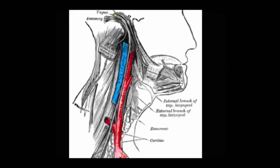Focusing on the right vagus, we can follow its course down through the neck with the great vessels — internal carotid, common carotid coming down the neck. And at this point, it crosses the right subclavian artery, and here it gives off the recurrent laryngeal branch, which passes up towards the larynx and the vocal cords.